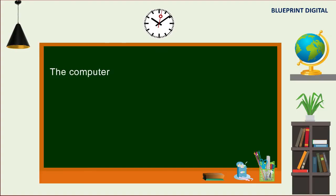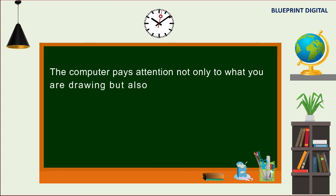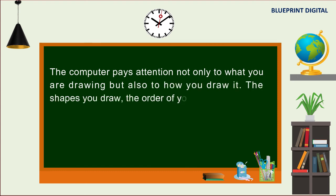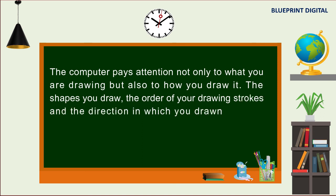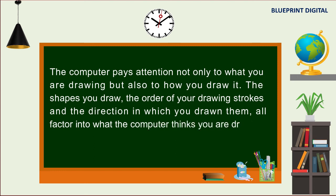The computer pays attention not only to what you are drawing but also to how you draw it. The shapes you draw, the order of your drawing strokes, and the direction in which you draw them all factor into what the computer thinks you are drawing.